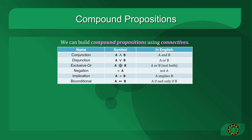Finally, the biconditional uses a two-headed arrow and is read as A if and only if B. Sometimes you'll see this abbreviated as IFF.